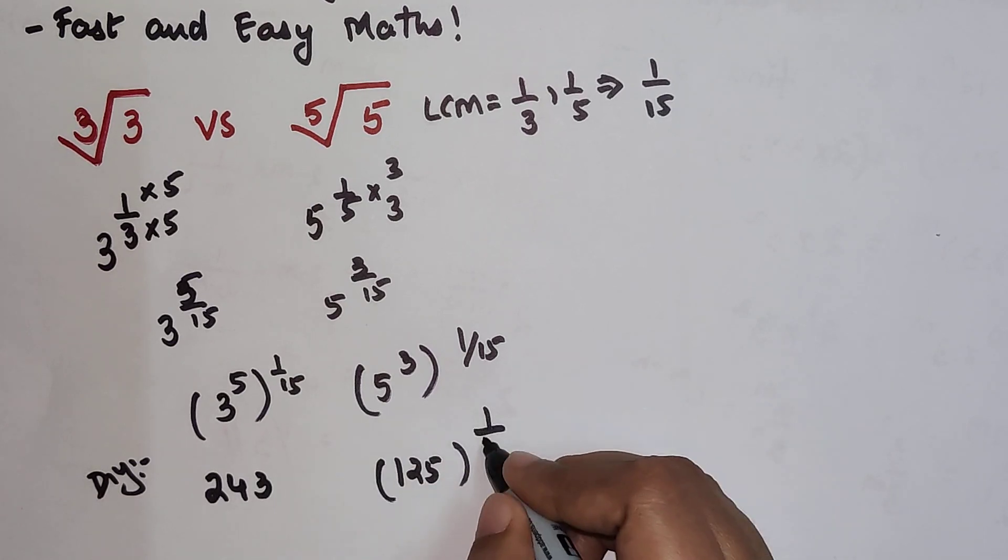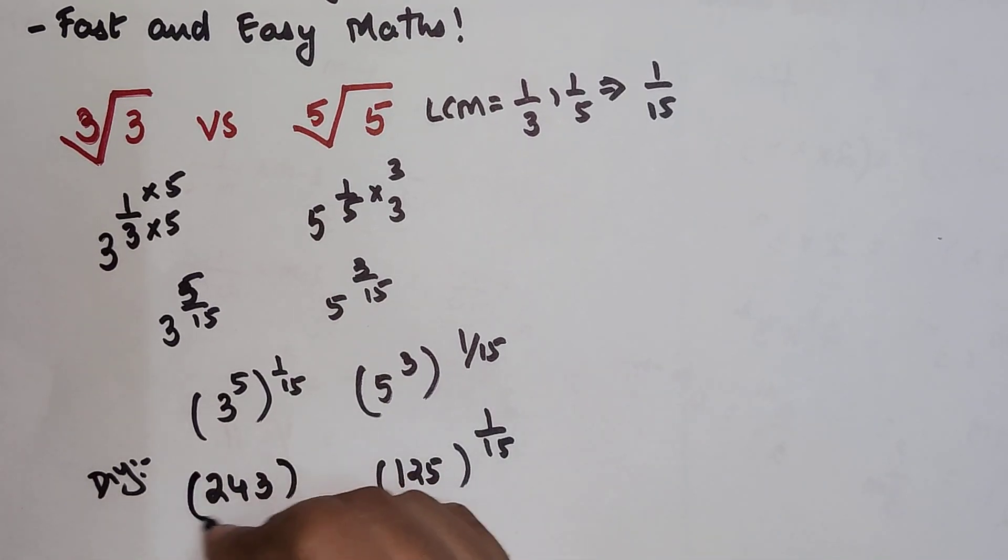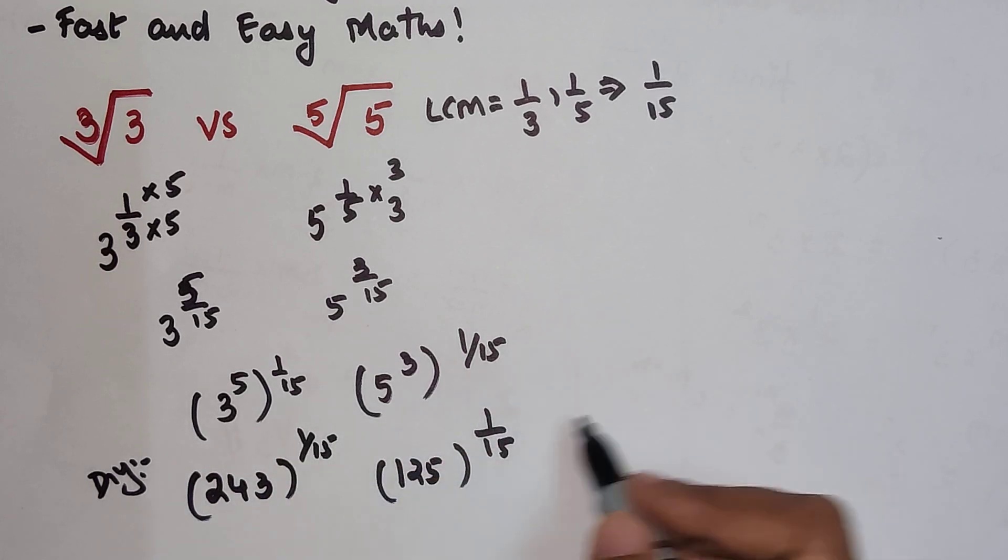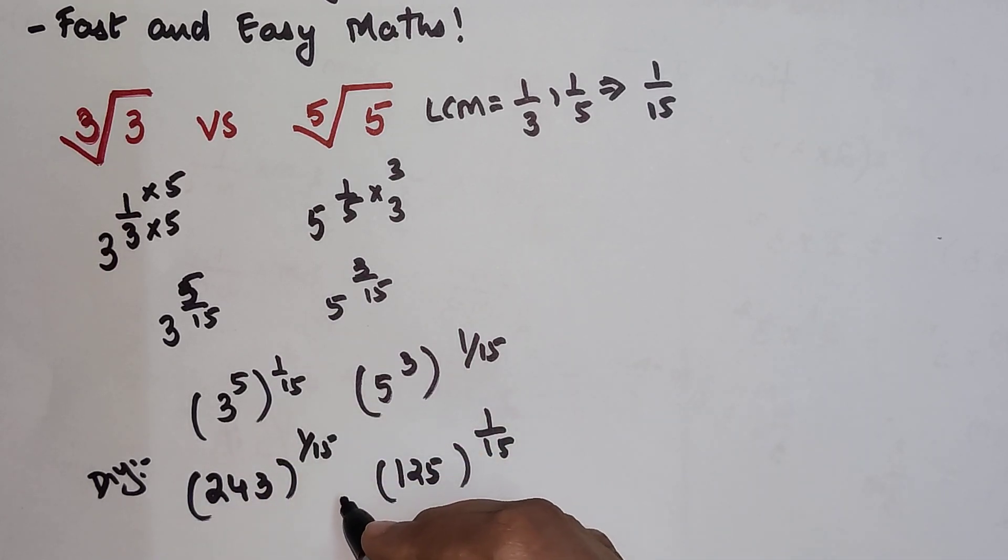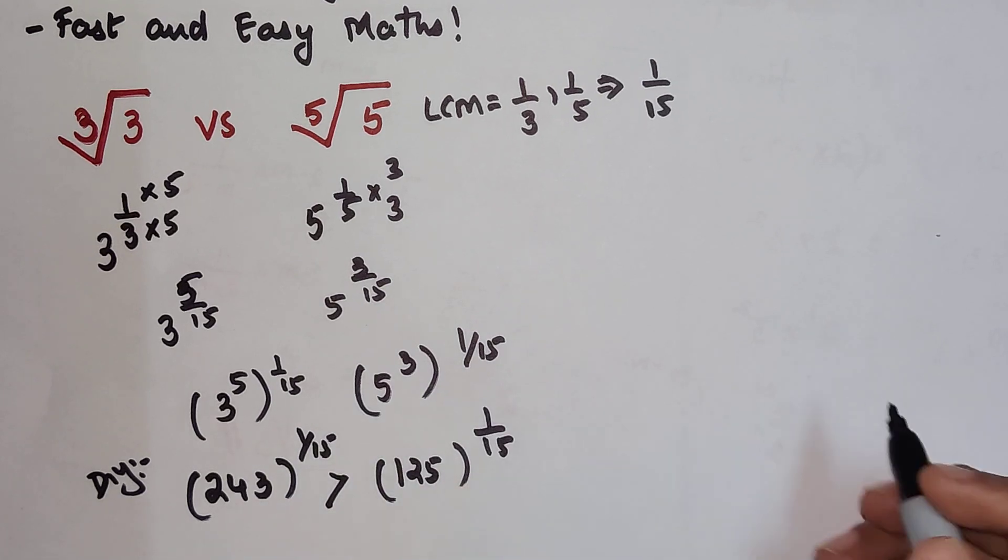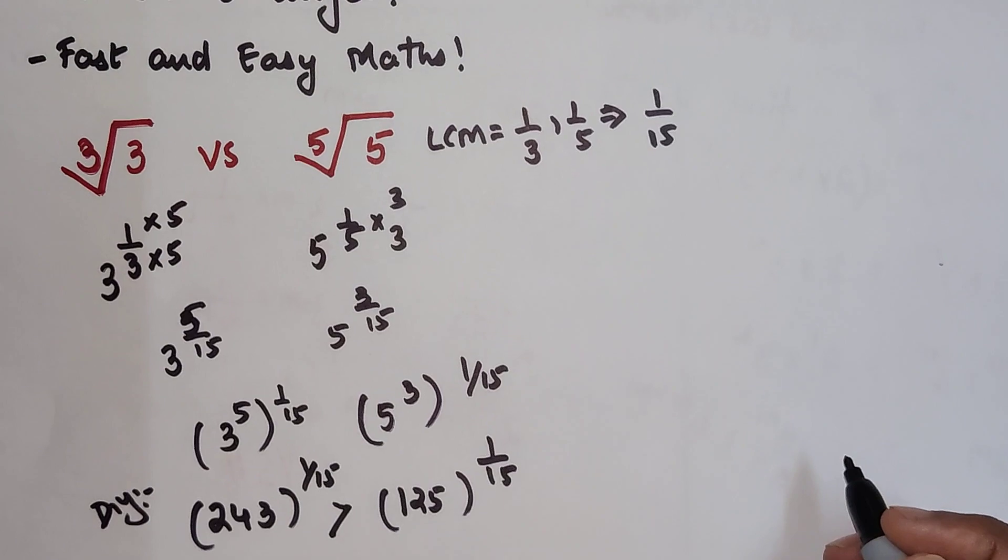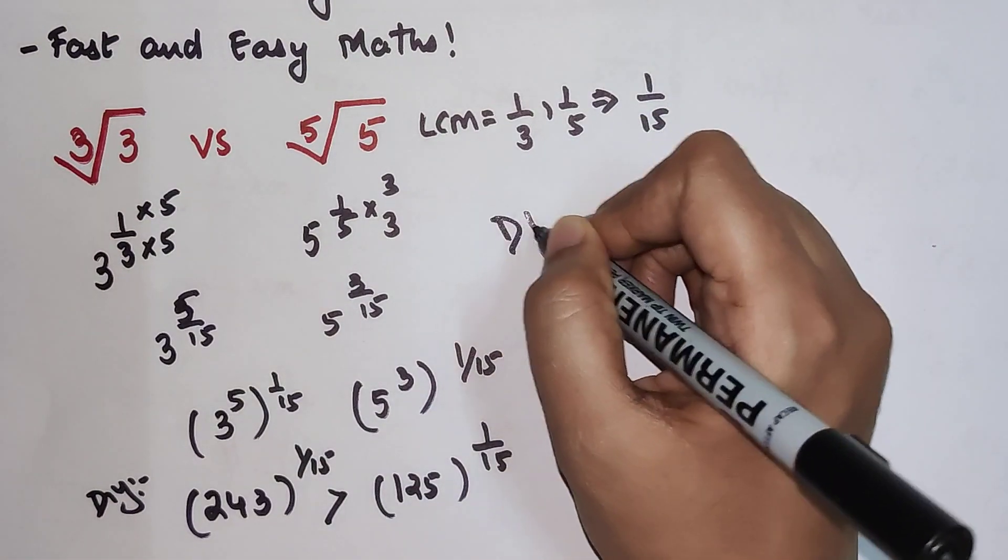Now both of them are raised to 1 upon 15. So now since the indices are same, I can say that this value is greater than this value. So that's it for now and time for your DIY.